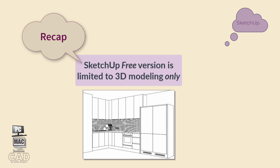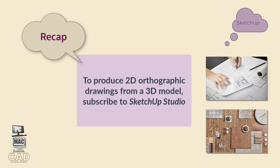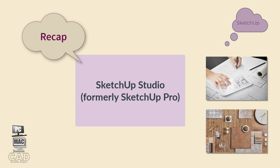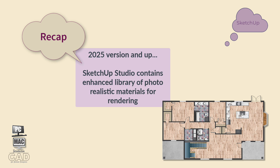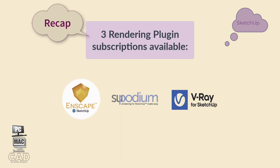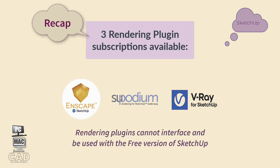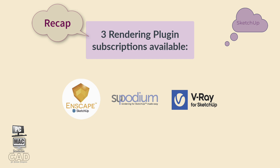To recap this video: when choosing which version of SketchUp to subscribe to as a student, recognize that the free version of SketchUp is limited to 3D modeling only. In order to produce 2D orthographic drawings from a 3D model, you will need to subscribe to a one-year lease of SketchUp Studio, formerly known as SketchUp Pro. Starting with the 2025 version, an enhanced digital library of photorealistic materials enables excellent rendering capabilities. If you exhaust the broad range of materials in SketchUp Studio, there are three rendering plugins available — SU Podium, V-Ray, and InScape — that pair with SketchUp Studio but do not interface with the free version.